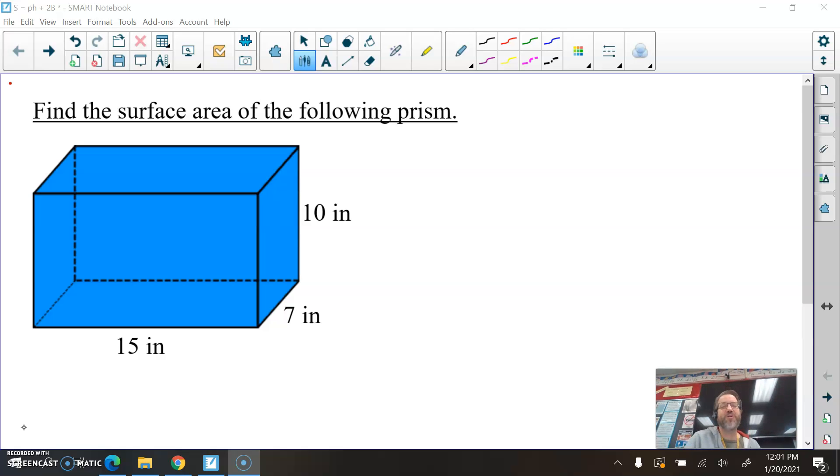This formula will work for all prisms. But just as a review, when finding the surface area of a prism, you can set up a net, create a net and show all of the faces and then find each of their areas and add them together. That's fine. In fact, if I look at this rectangular prism, I know some of the faces are the same. So I can start by looking at the top and the bottom.